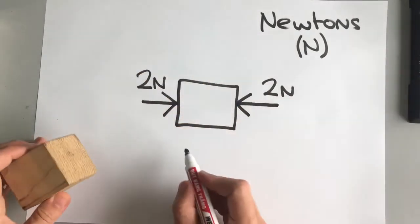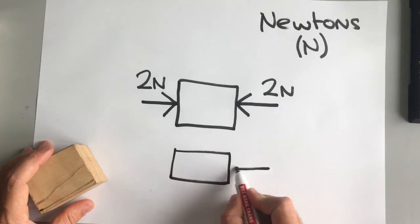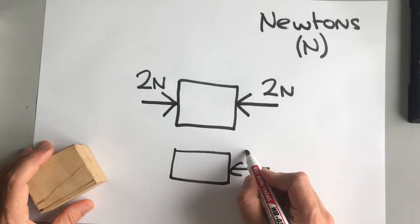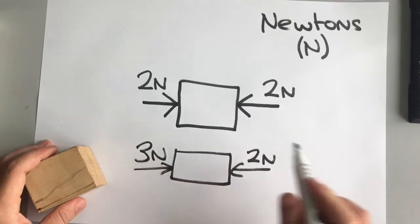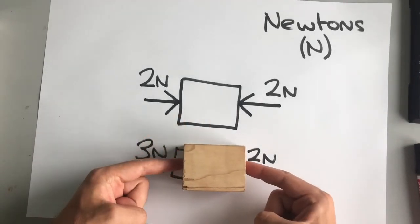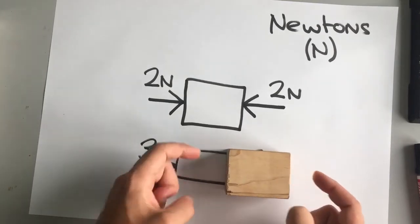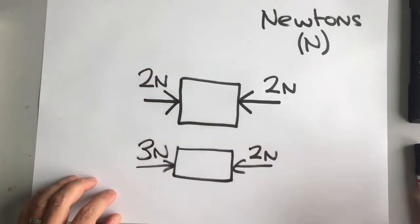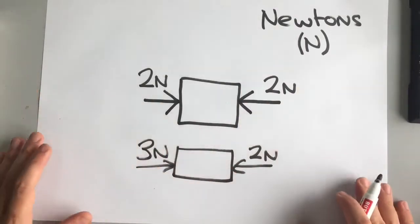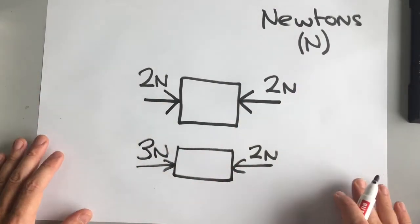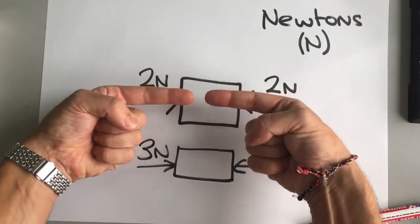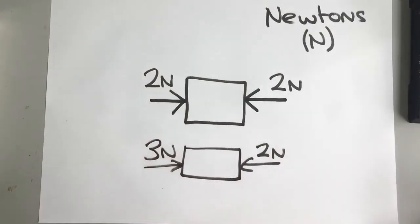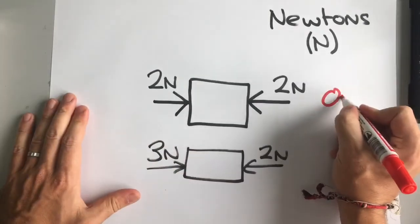In a different example, if I have two newtons from one finger but three newtons from the finger on the left, the block is going to move that way because that force is bigger. Now we've put numbers on it, it's a little bit easier to see what's going on. We've got two newtons going that way and two newtons going that way, so they cancel each other out. Our total force acting on the block, once you've done all the cancelling out, is zero newtons.